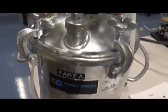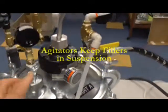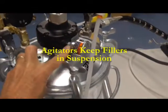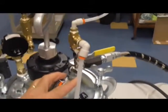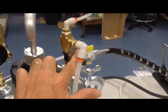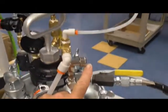Part A tank has material in it that may settle, so we put an air motor agitator on this tank, which is operated with compressed air. You can control the speed with this controller here.